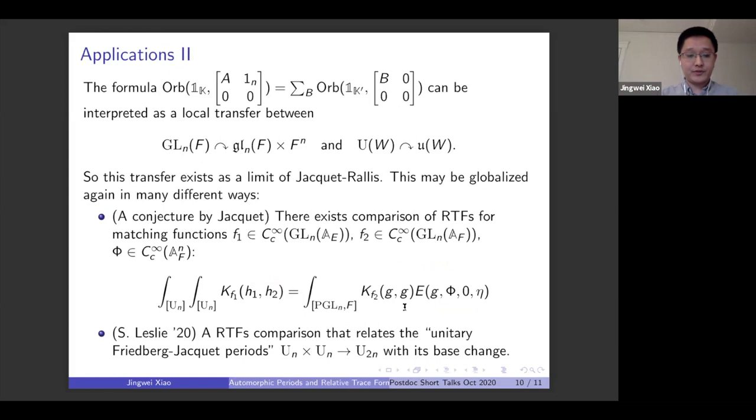And also there's another way to globalize this picture. This is the work of Spencer Leslie, where you consider the periods related to the inclusions of U_n × U_n into U_{2n}. And this is the unitary analogue of Friedberg-Jacquet periods. And to relate this to the periods of the base change. And the corresponding relative trace formula comparison also leads to the same local pictures,